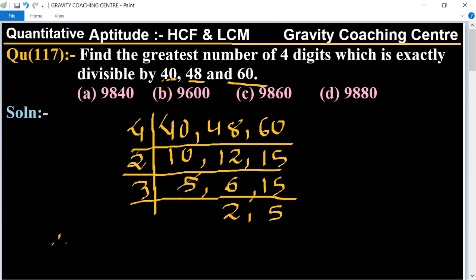Therefore LCM equals 4 multiplied by 2 multiplied by 3 multiplied by 2 multiplied by 5 equals their product equal to 240.